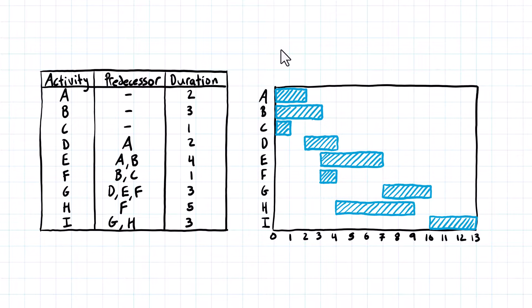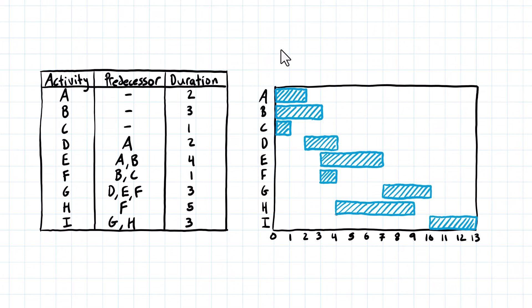Now that we have the Gantt chart drawn, we can see that the duration of the project is going to be 13 days — that's the expected duration assuming nothing goes wrong. That wasn't apparent from the table of dependencies, which only gives us individual durations and relationships, not the total project duration or general flow. Now you can look at the chart from left to right and get an idea of when activities are starting and finishing throughout the project.